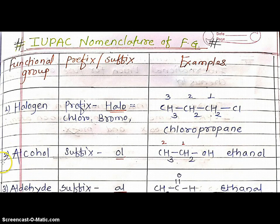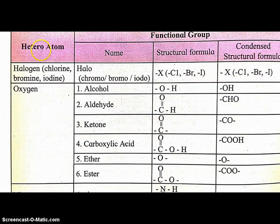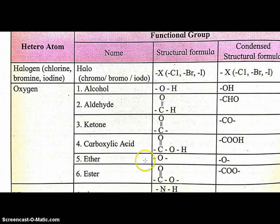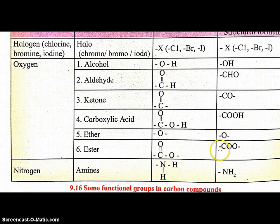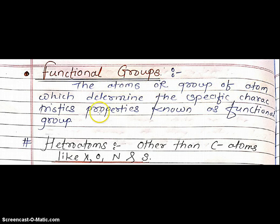Functional group: the atoms or group of atoms which determine the specific characteristic properties are known as a functional group. Other than carbon atoms like oxygen, nitrogen, and sulfur are known as heteroatoms. Some important functional groups: halogens — halo (chloro, bromo, iodo); alcohol — OH; aldehyde — CHO; ketone — CO; carboxylic acid — COOH; ether — O; ester — COO; amines — NH2. Thank you.